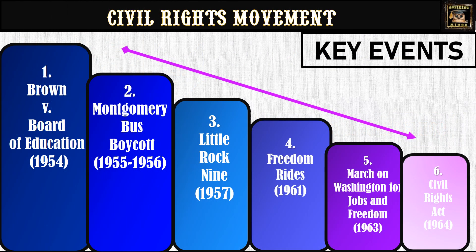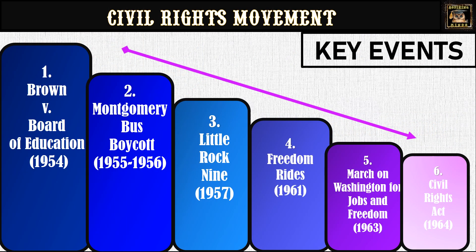Now, having seen the key causes that led to the civil rights movement, let's look at the six major events arranged in chronological order to show exactly what happened.